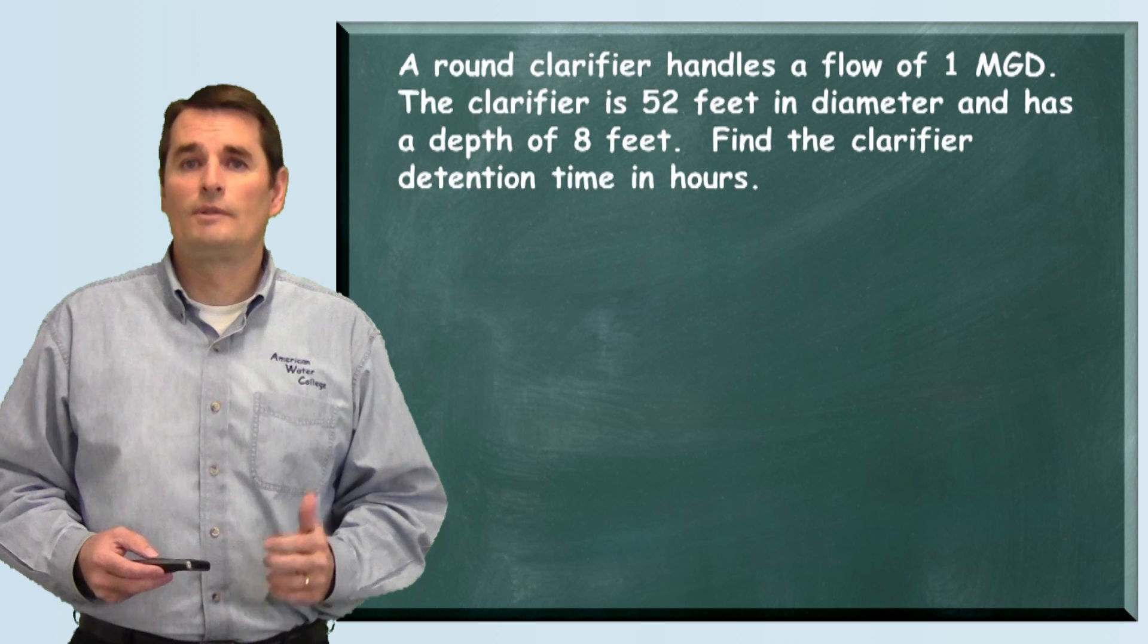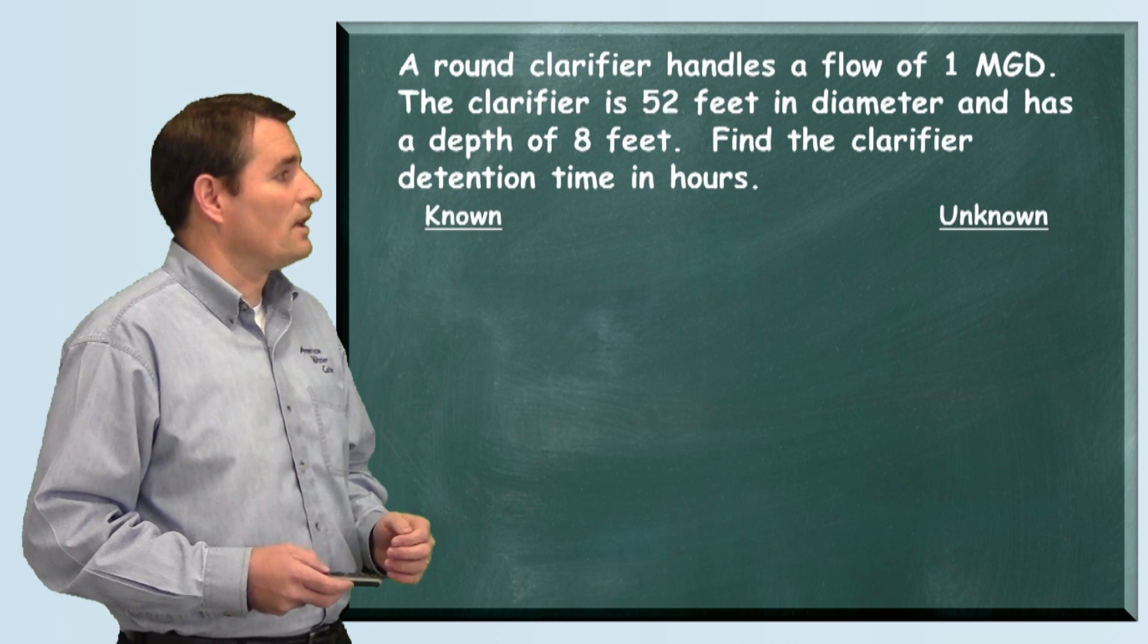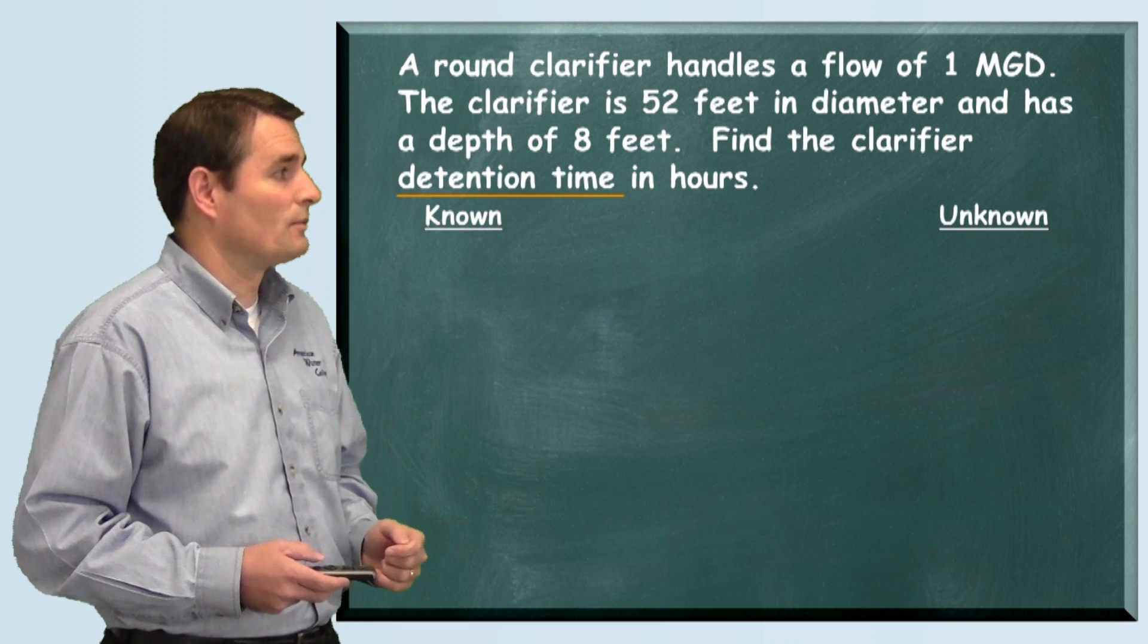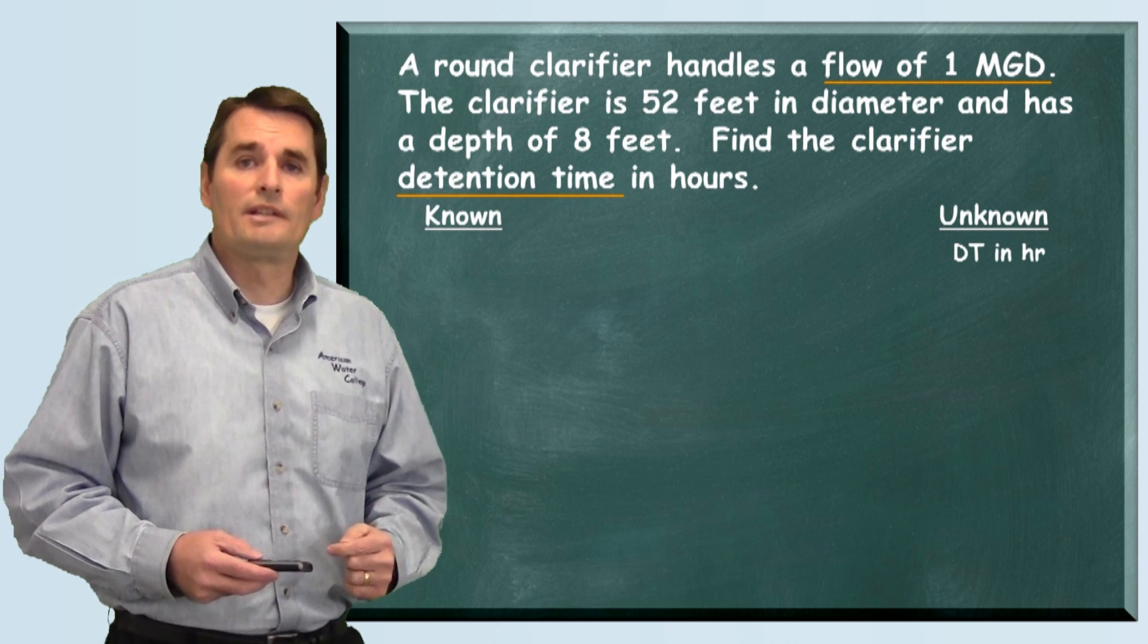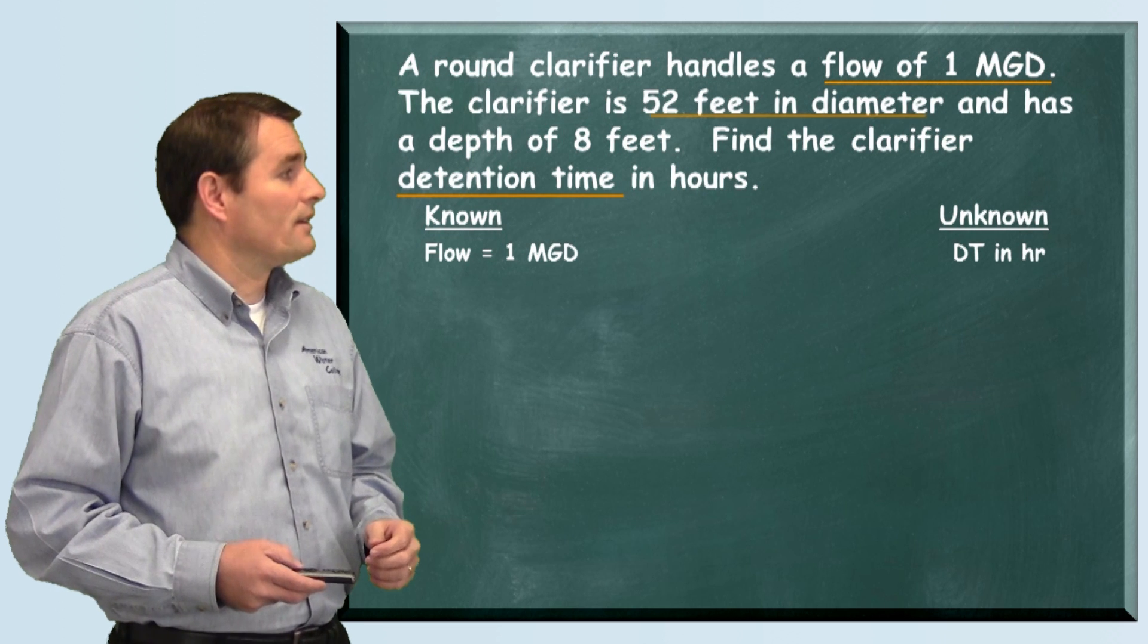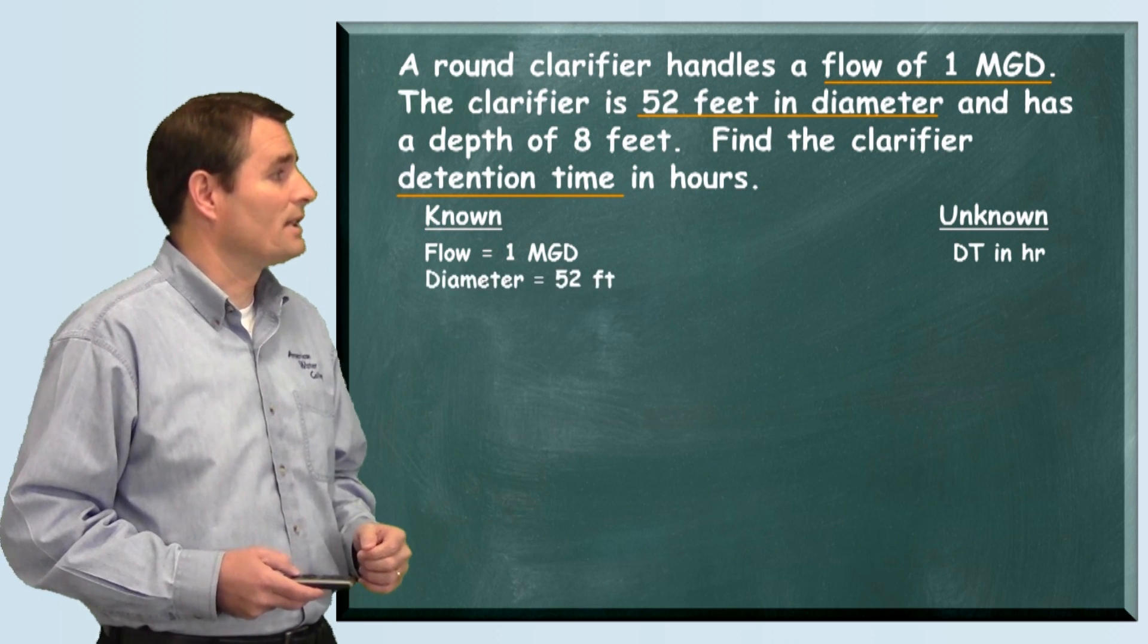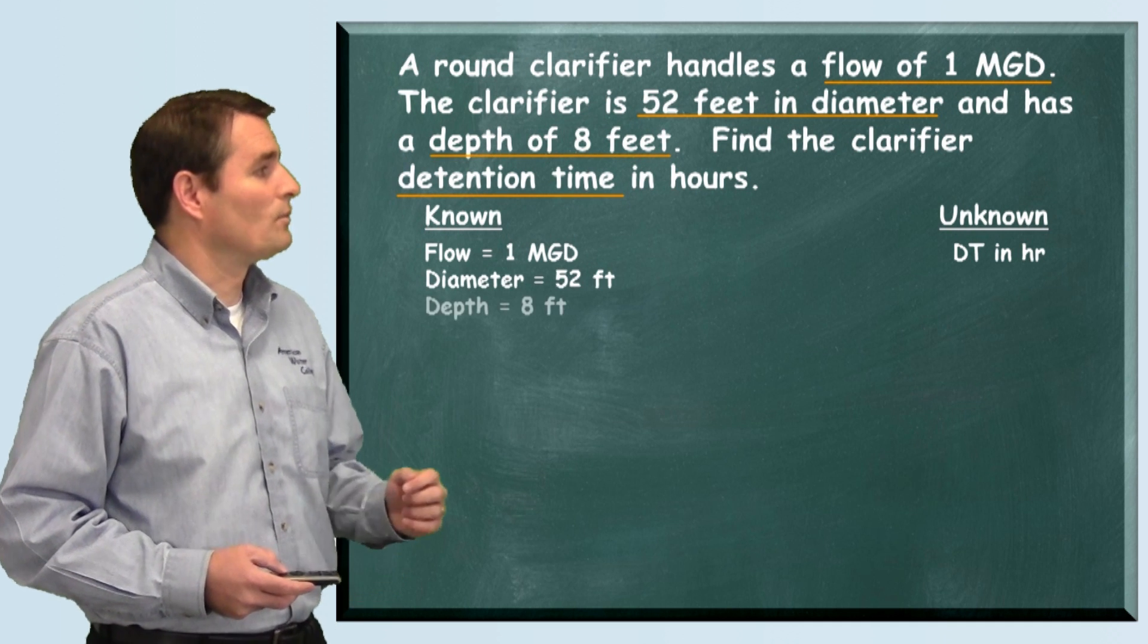Like we always do, we want to write down the information that they give us. Starting with our unknown information, they want us to find detention time in hours. They also gave us our flow is 1 million gallons per day. They told us the diameter of the tank, 52 feet, and the depth of the tank is 8 feet.